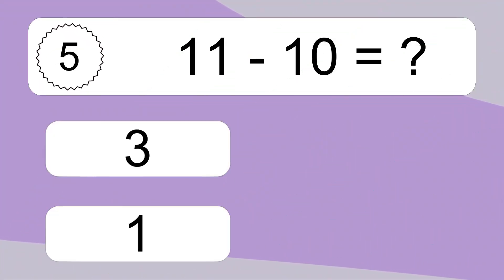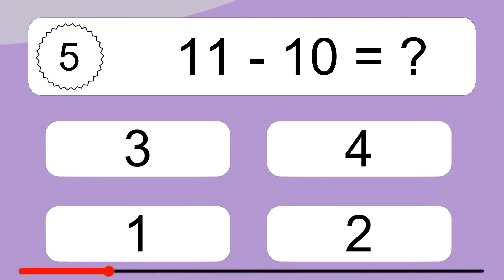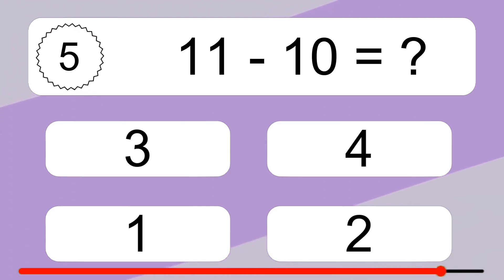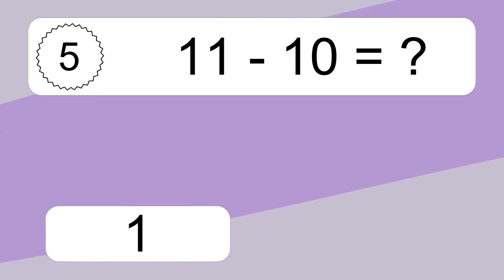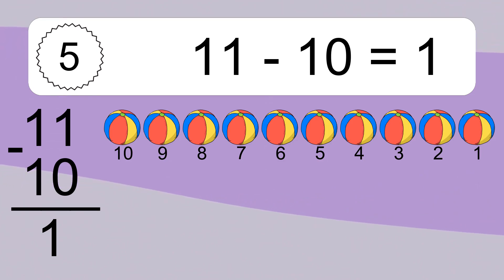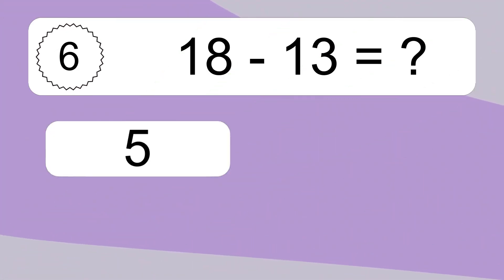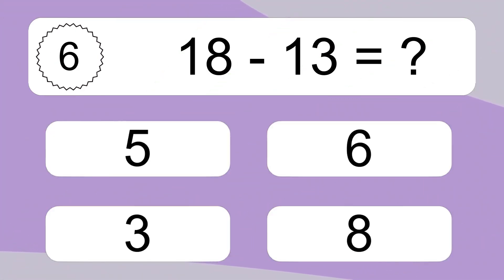11 minus 10 equals what? 11 minus 10 equals 1. Let's count it. 10, 9, 8, 7, 6, 5, 4, 3, 2, 1. 11 minus 10 equals 1.